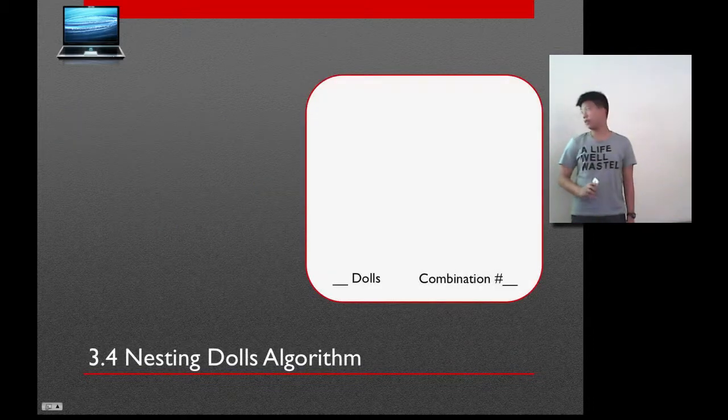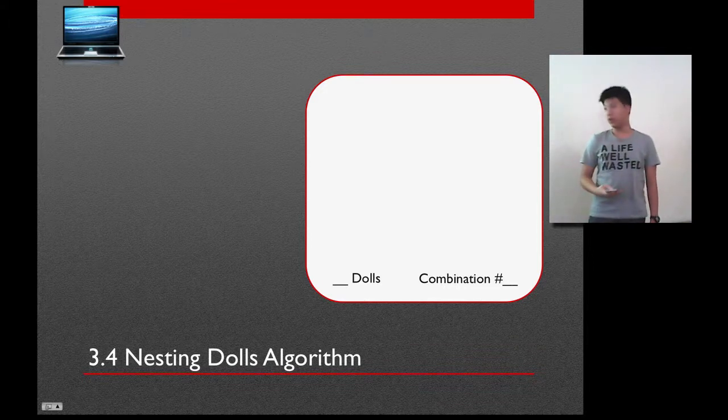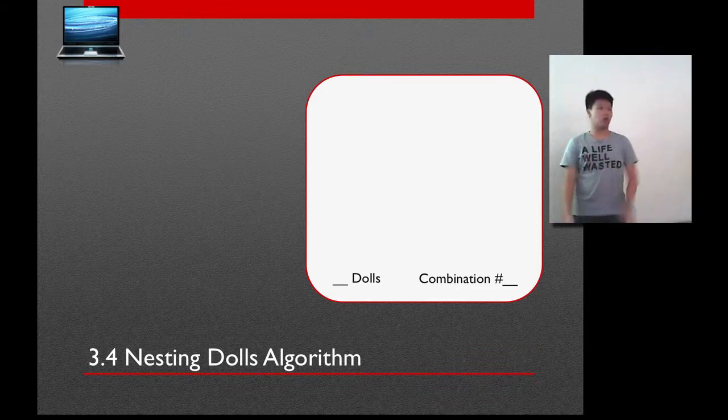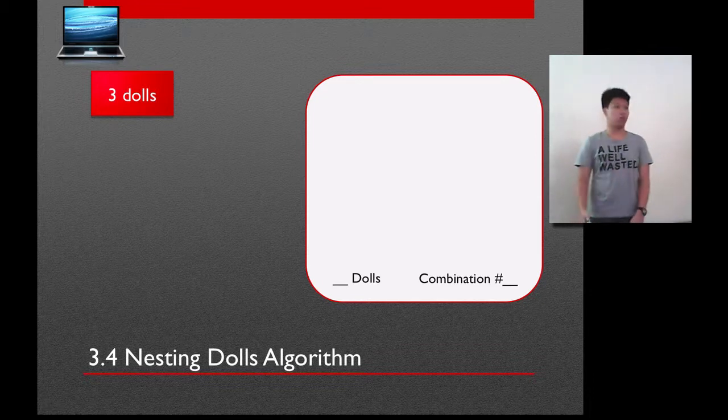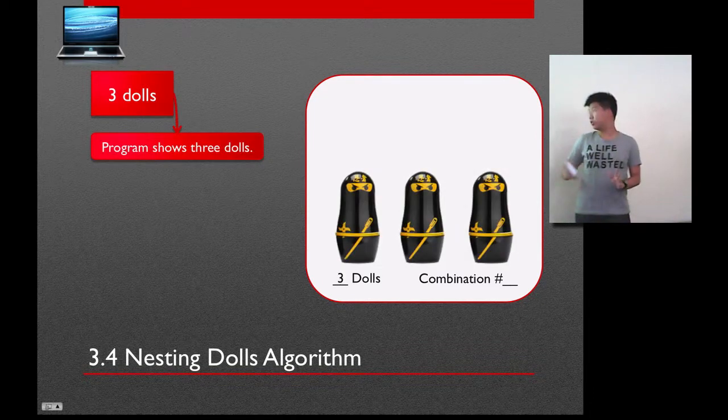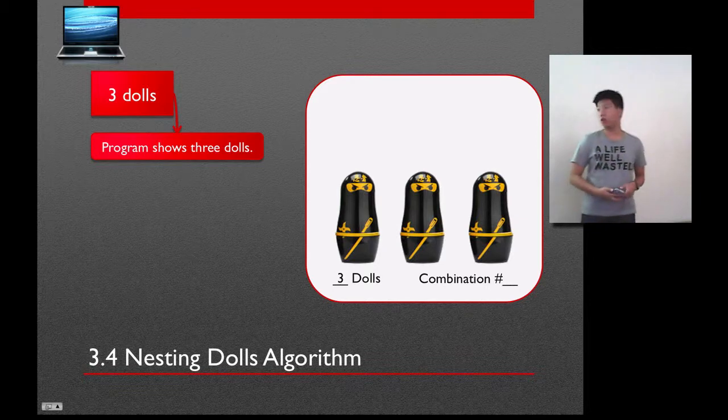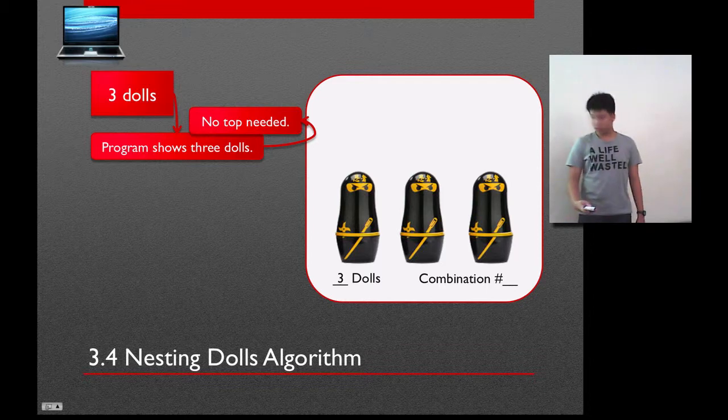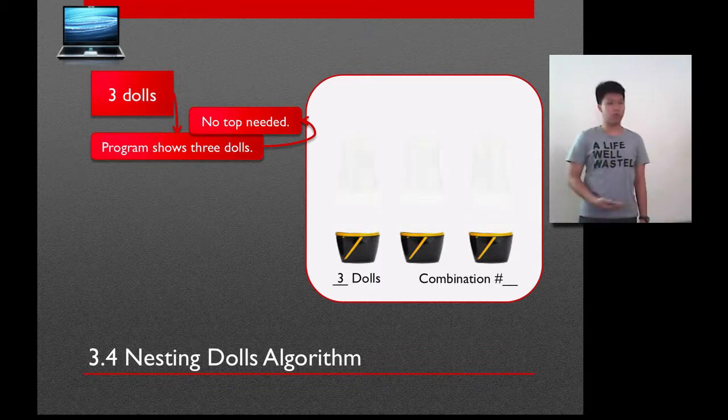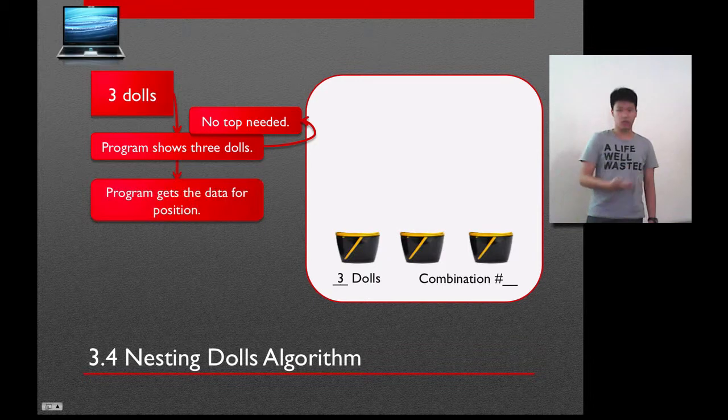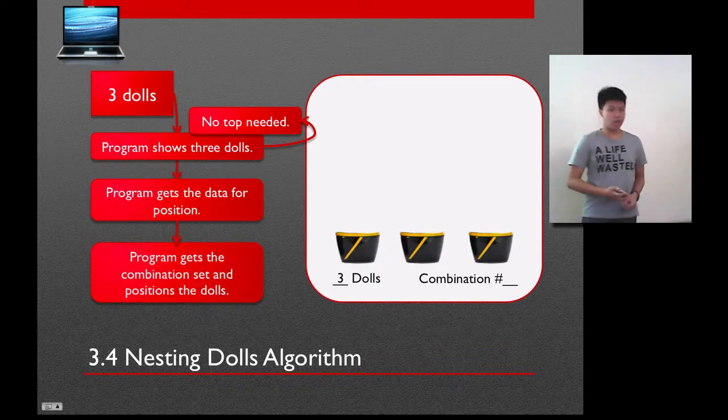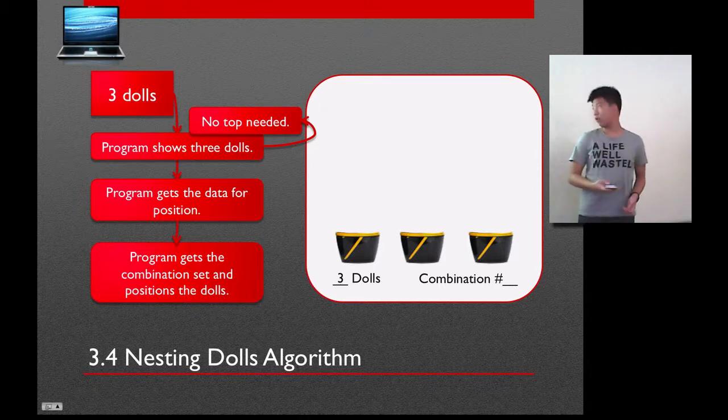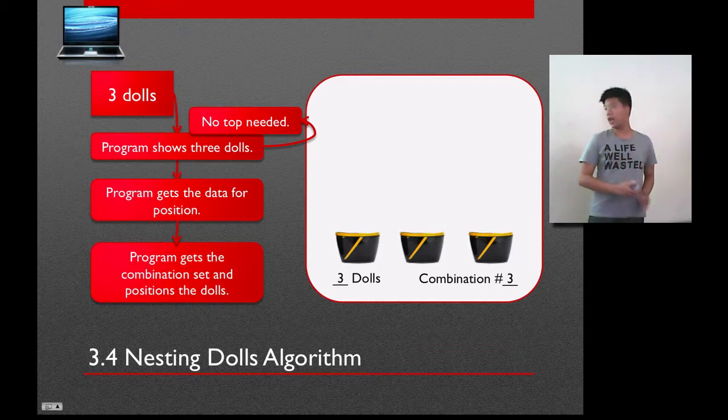So, at that program, we have the nesting dolls, which I will show you here. Let's say we take 3 dolls inside. The program will show 3 dolls. And then since the top of the dolls will be so annoying to look, the program will try to take the top out of it. And then the program will get the data for positions. And the program gets the combination set, and positions the dolls. For example, if we wanted to find the third combination in the 3 dolls, the program will get the numbers, and then position the dolls, so that it could be like this.